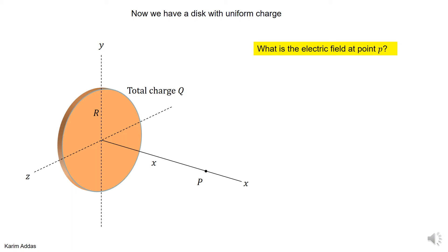We want to find the electric field at a point P due to a disk of charge. The disk of charge exists in the YZ plane, and the charge is distributed everywhere uniformly on the disk. The charge distribution is taken to be uniform, the radius of the disk is big R, and it's the same kind of geometry as the previous problem of the ring. We want to find the electric field at point P, a distance x away from the origin, which is also at the center of the disk.